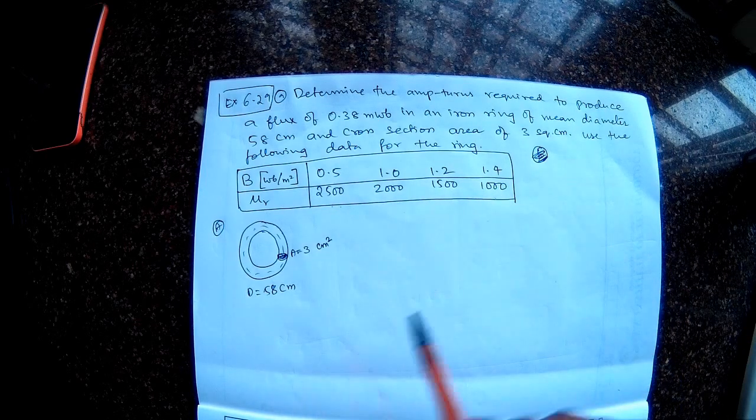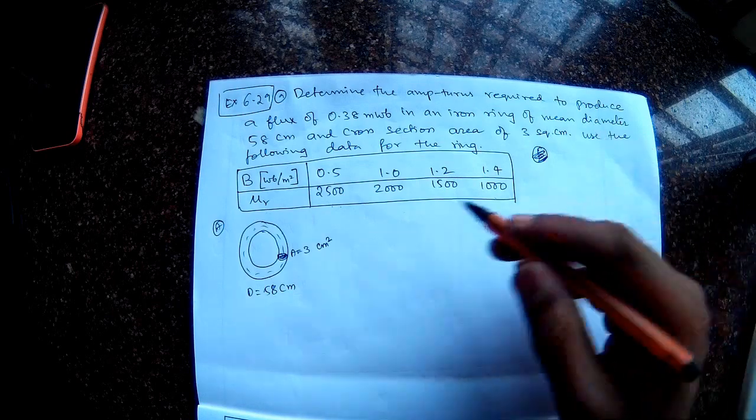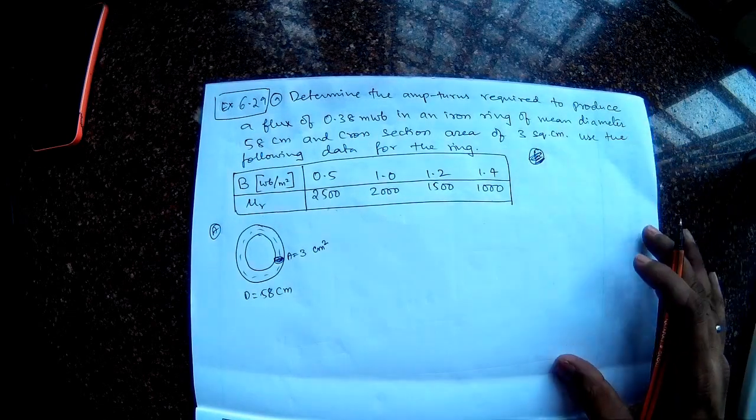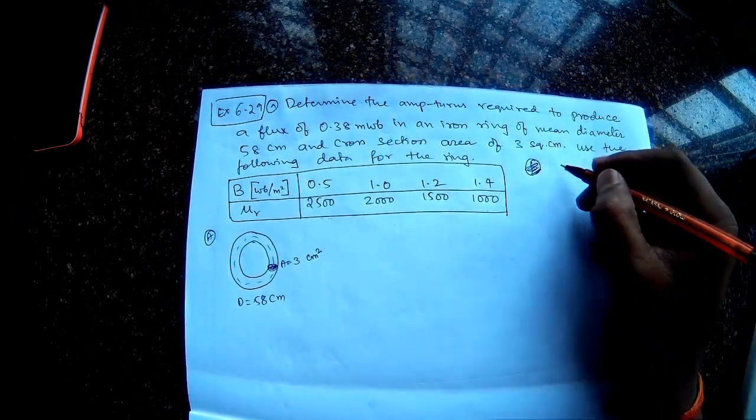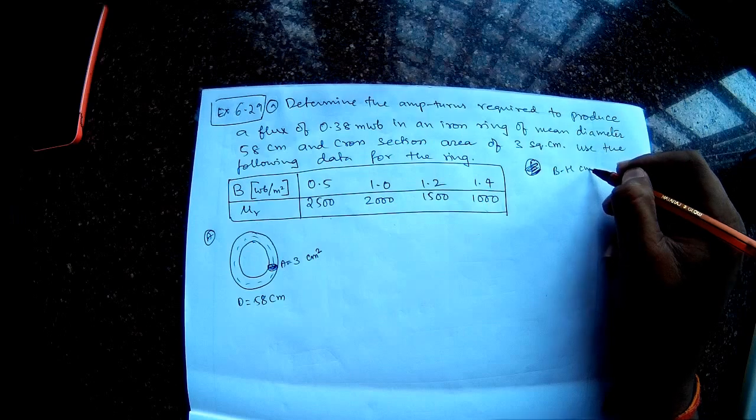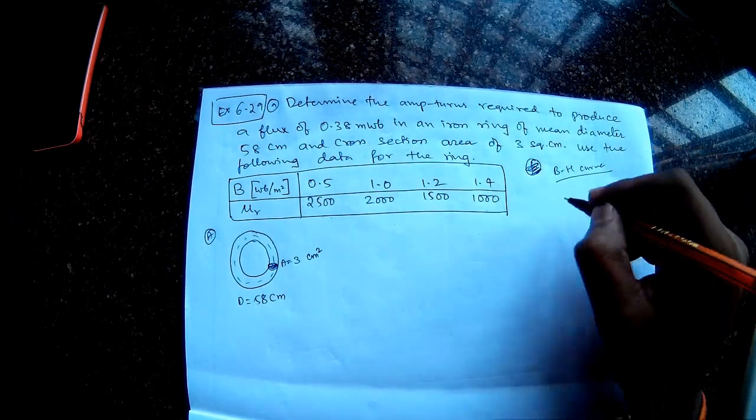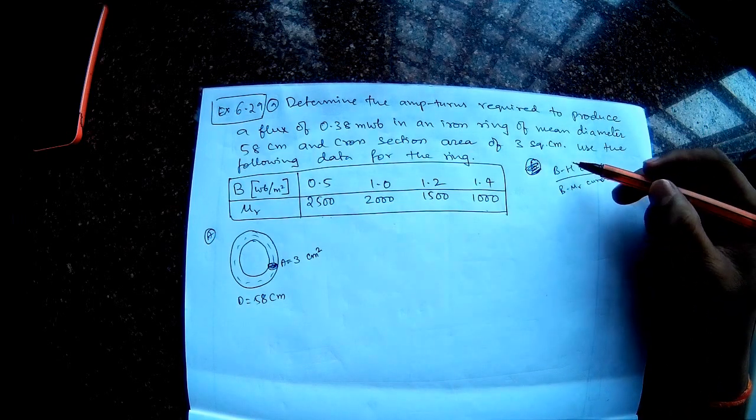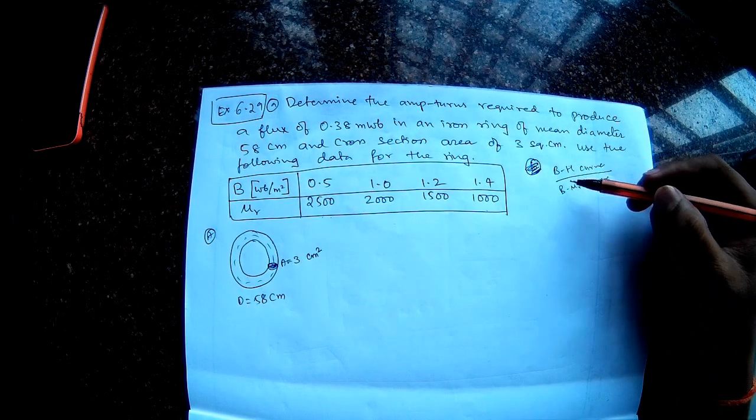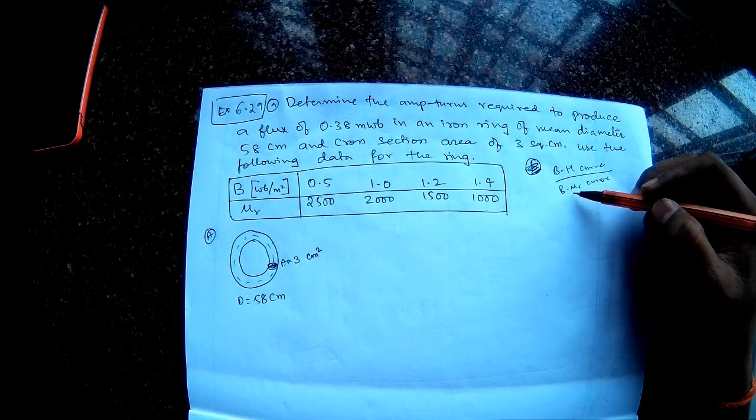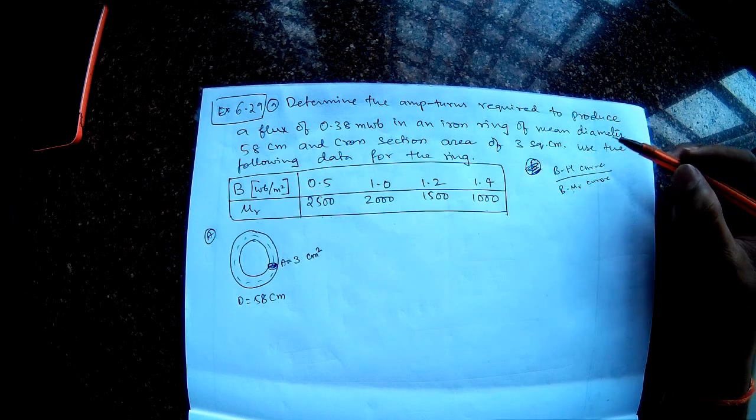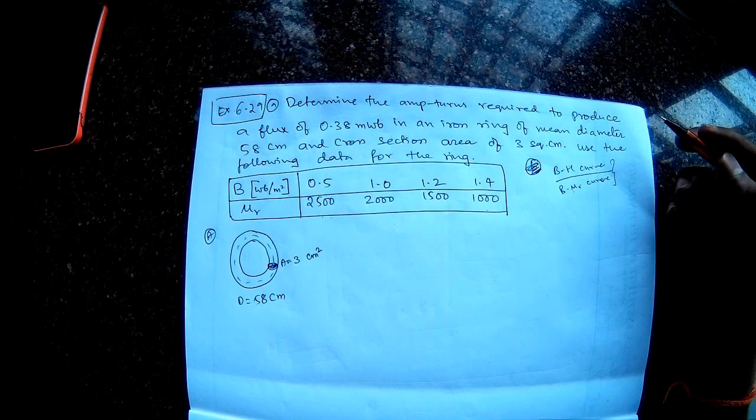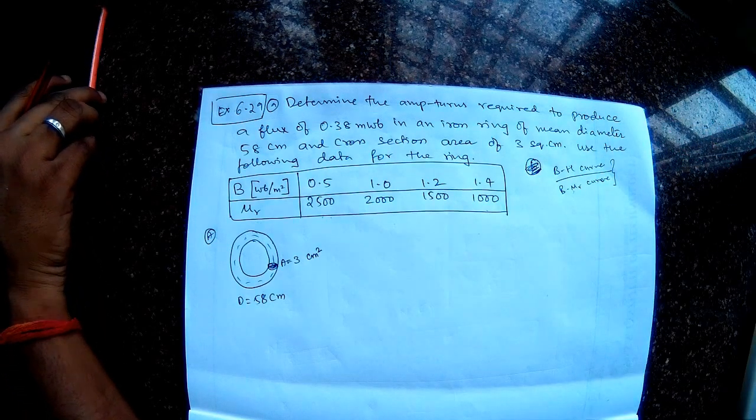So as the flux density increases, the material gets saturated, and as it is getting saturated, it cannot offer low reluctance and so therefore mu R is becoming low. So this is the general trend. You can also make a quick plot of it and then you can see how the mu R itself is varying. So the new thing in this question is that normally B-H curve will be given, but for this problem the B-mu R curve is given. Anyway, from B-H curve I can derive B-mu R curve and from B-mu R curve I can also derive B-H curve.